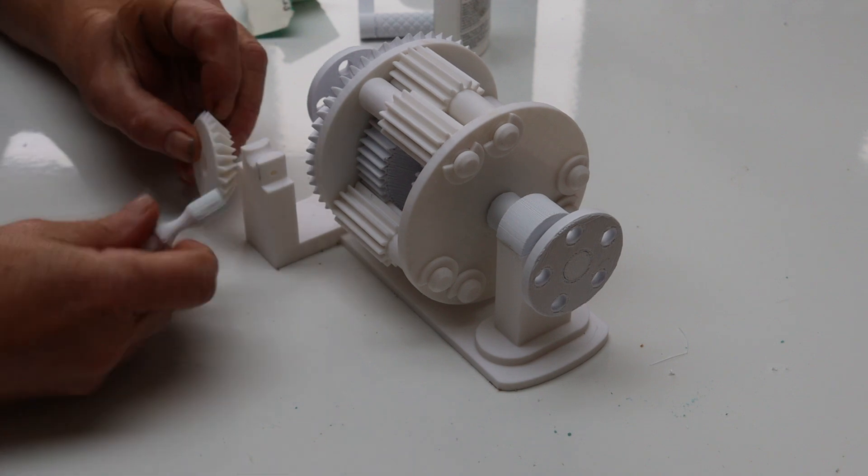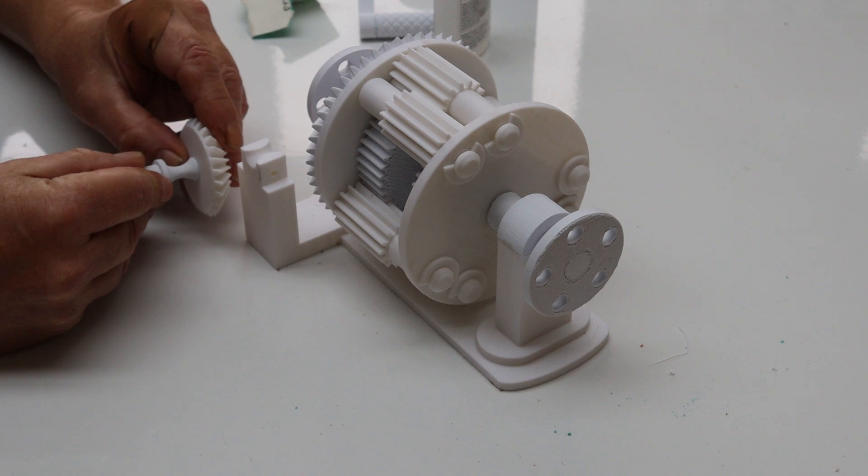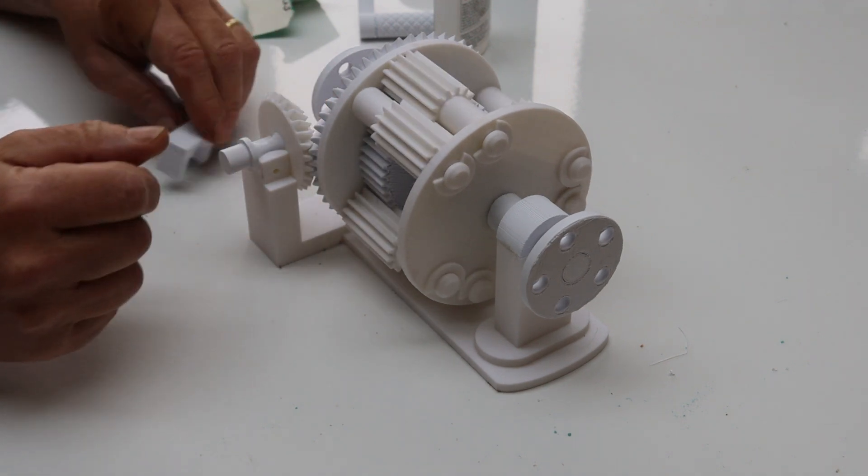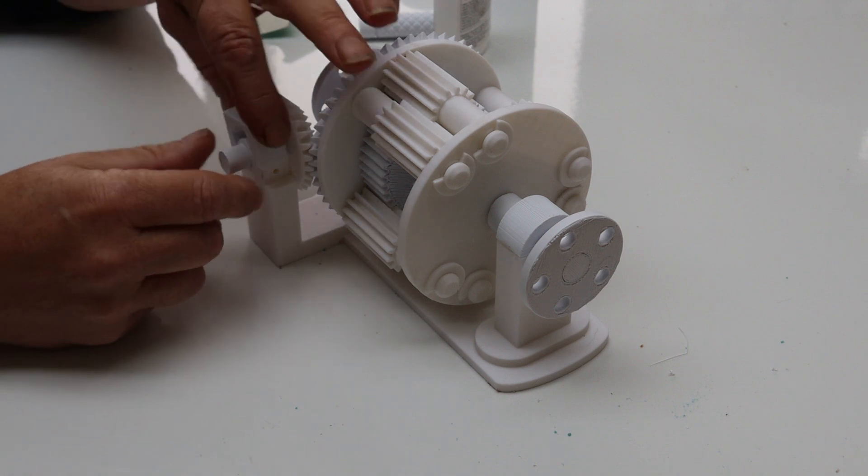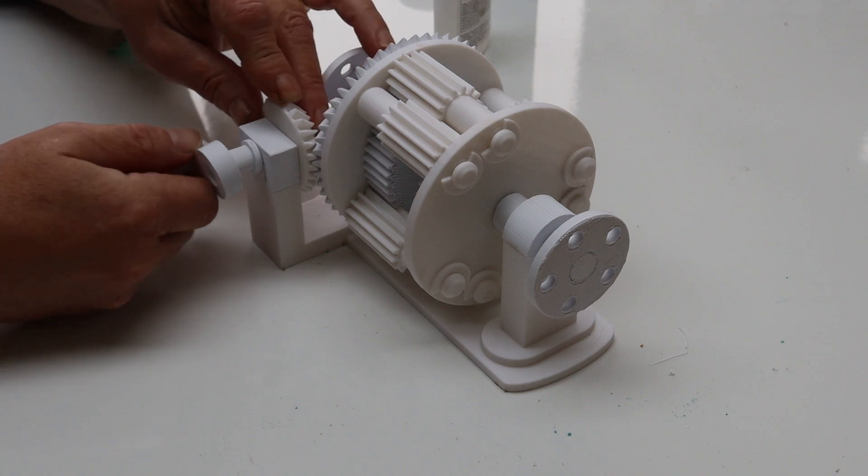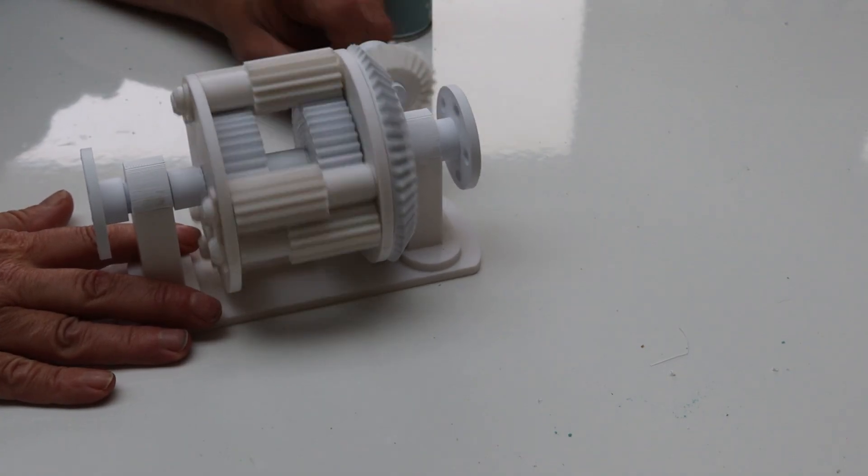For the drive, glue the small bevel gear onto the axle. That side, not that side. Quite close, against a little sort of dip in it. Pop it in there. There's the clip. Glue the clip on there. And the handle glues on there by sliding onto there. Turn the handle, and that's it working.